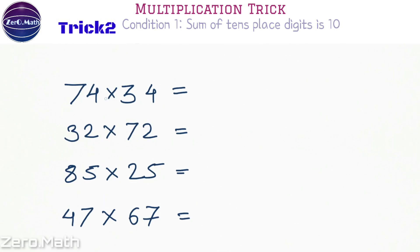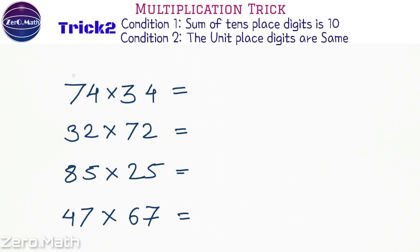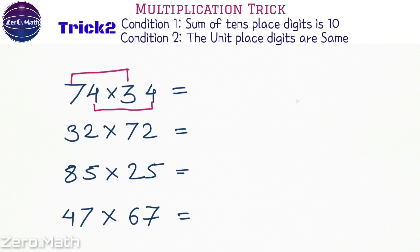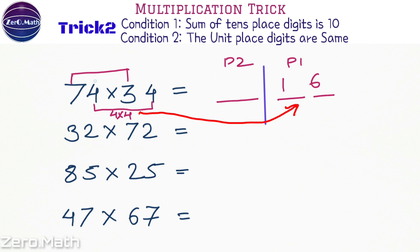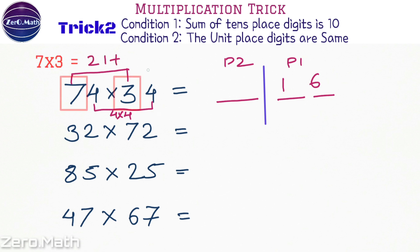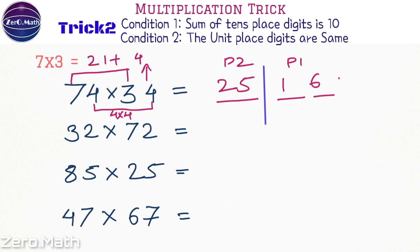Trick 2 can be applied when the sum of the tens place digits is 10 and the unit place digits are the same. Here the tens place digits 7 plus 3 equal 10, and the unit place digit is 4, which equals 4. Again I will write the answer in two parts. Part 1 is 4 into 4, which equals 16. Part 2 is the multiplication of the tens place digits — 7 into 3 is 21 — plus the unit place digit: 21 plus 4 is 25. So 2516 is our answer.